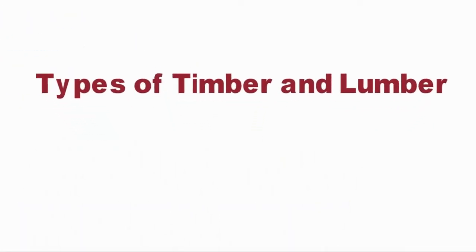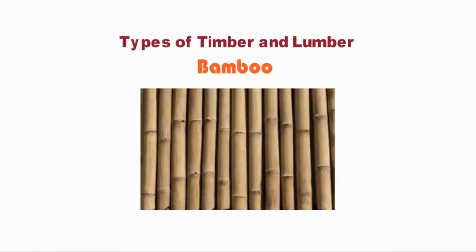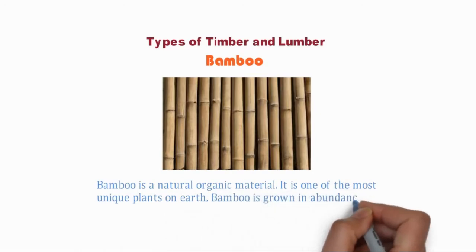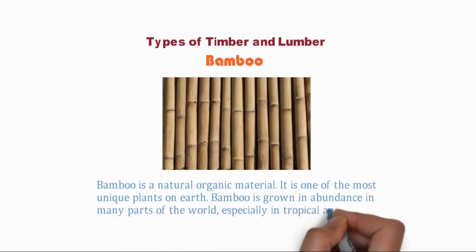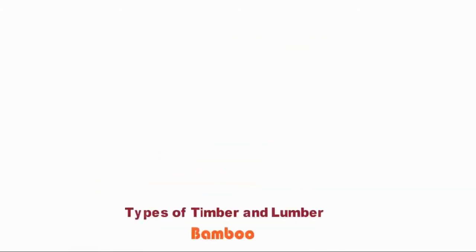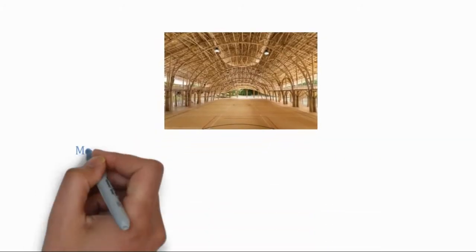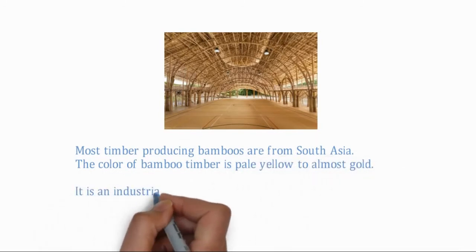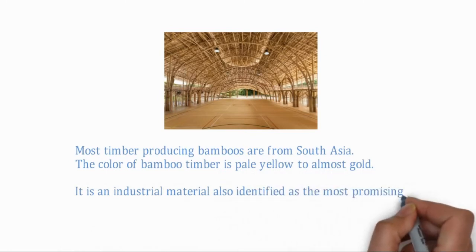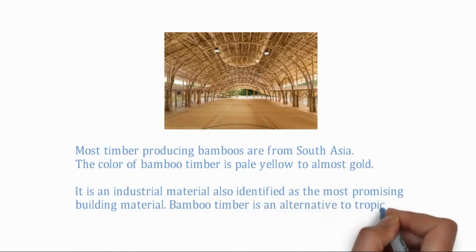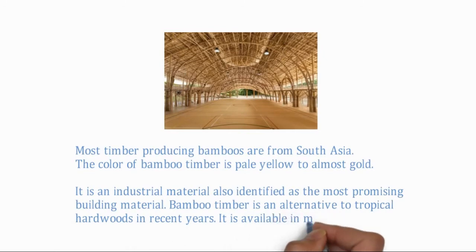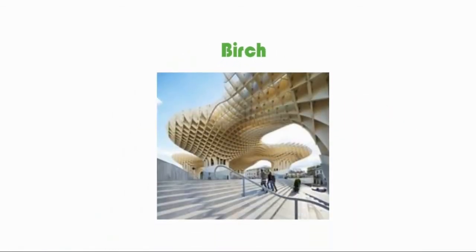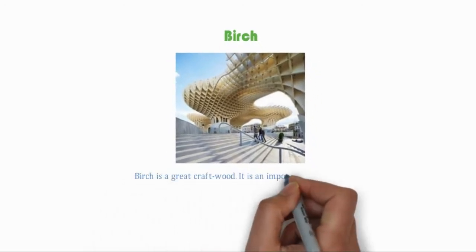Types of timber and lumber. Bamboo is a natural organic material and one of the most unique plants on earth. It is grown in abundance in many parts of the world, especially in tropical and subtropical regions. Most timber-producing bamboos are from South Asia. The color of bamboo timber is pale yellow to almost gold. It is an industrial material, also identified as the most promising building material, and is an alternative to tropical hardwoods. It is available in many forms.